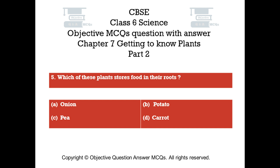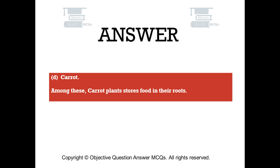Question number five. Which of these plants stores food in their roots? Option A onion. Option B potato. Option C pea. Option D carrot. The right answer is option D — carrot. Among these, carrot plant stores food in its roots.